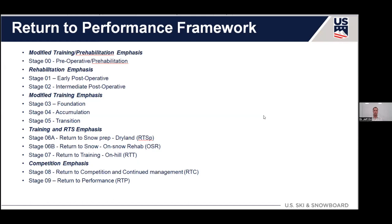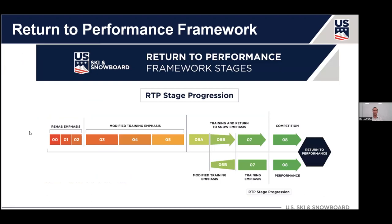This gives you a general idea: initial rehab emphasis in phases one, two, and three; then modified training as we're getting stronger in phases three, four, and five; returning to snow or sport; and then getting into competition. You can go back and forth — it's not always a linear straight line, and there is some accommodation for backtracking if that happens.